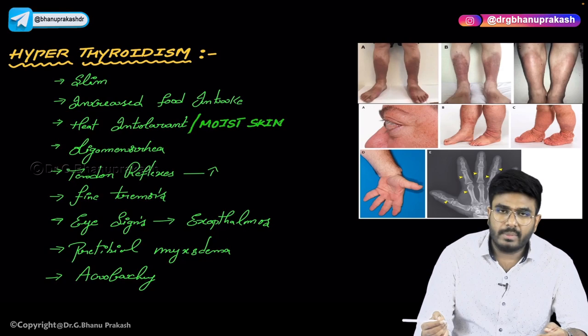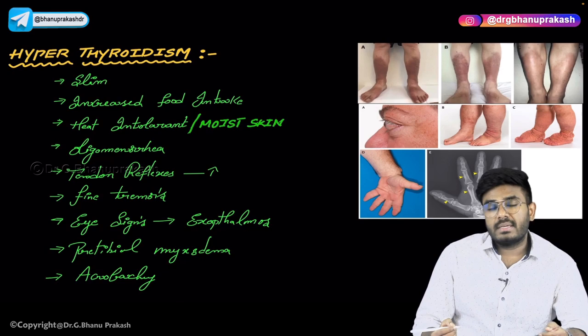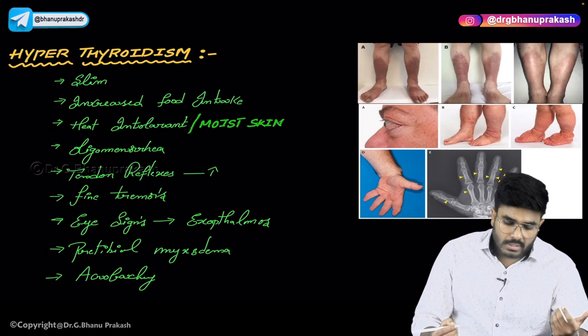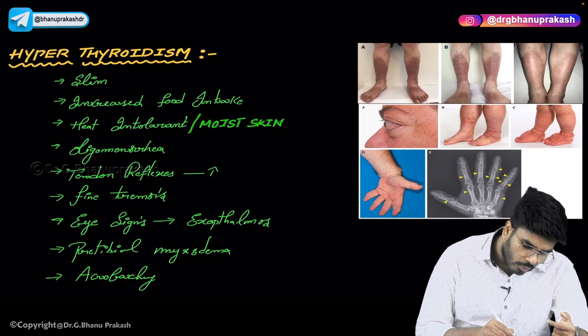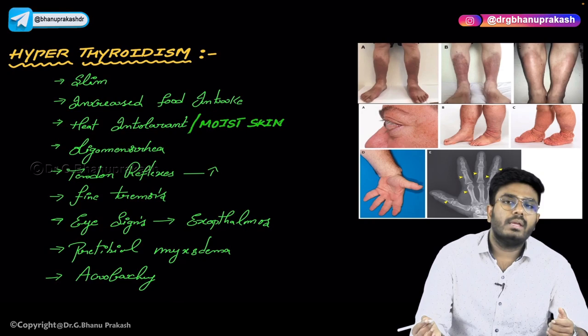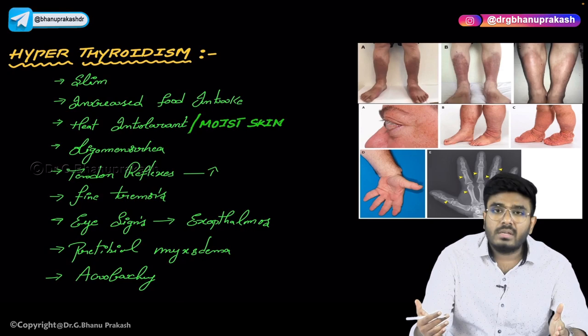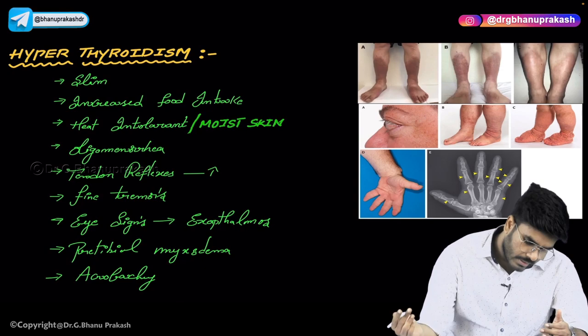Now let's talk about some features in females. T3 and T4 hormones also have a role in ovarian function. Females with too much T3 and T4 will suffer with oligomenorrhea — meaning they will have delayed periods. Normally the menstrual cycle comes once every 28 days, but with oligomenorrhea she may get her period once in 50 to 60 days.